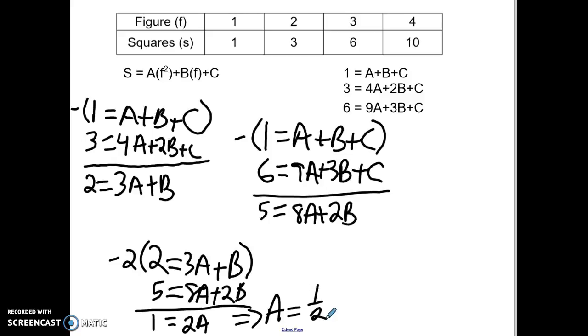Now I can take a and plug it back into my equation and solve for b. So 5 equals 8 times 1 half plus 2b. So 1 equals 2b because half of 8 is 4. Subtract it, I get 1, so b equals 1 half.